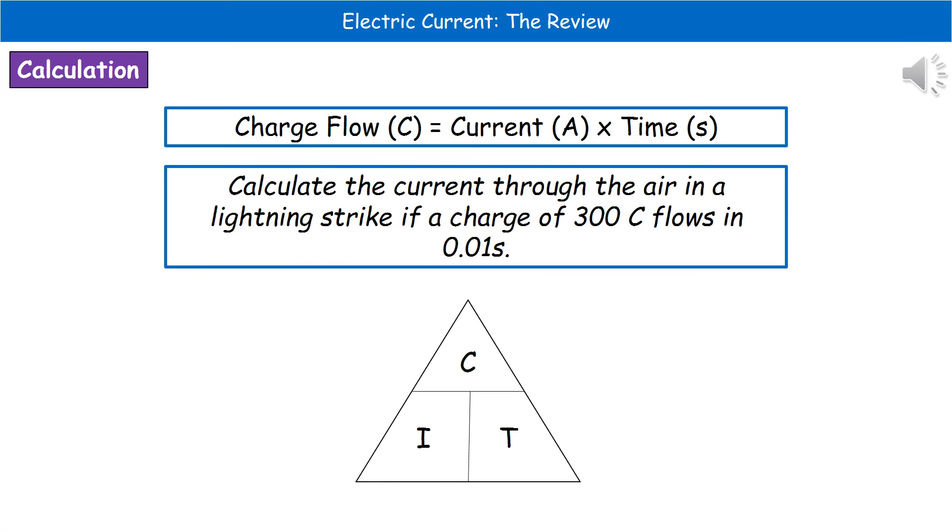The only way they could actually make any of these calculations more complex on the actual exam paper is to ask you to find a different subject of our equation. So as opposed to ask you to calculate the charge flow, they could ask you to find the current or the time. So the example I've given you here: calculate the current through the air in a lightning strike if a charge of 300 coulombs flows in 0.01 seconds. Quite clearly we need to rearrange to give current as the subject.